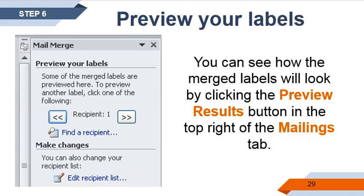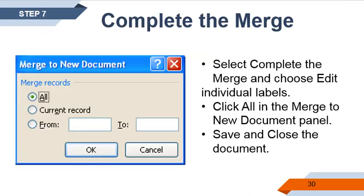You can also preview your labels. You can see how the merged labels will look by clicking the Preview Results button in the top right of the Mailings tab. To complete the merge, select Complete the Merge and choose Edit Individual Labels. Click All in the Merge to New Document panel, then click All, save, and close the document.